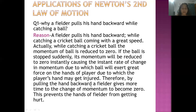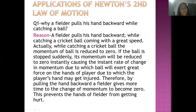Therefore, by pulling the hand backward, a fielder gives more time to change the momentum to zero. If the player pulls his hand backward, the ball's momentum changes from motion to zero over more time. If the time increases, it will take more time to reduce the momentum to zero, which prevents the hands of the fielder from getting hurt — less force will be applied on the player's hand. We apply the principle that force is inversely proportional to time: if we increase the time of change in momentum, the force applied on the hands of the player gets reduced.